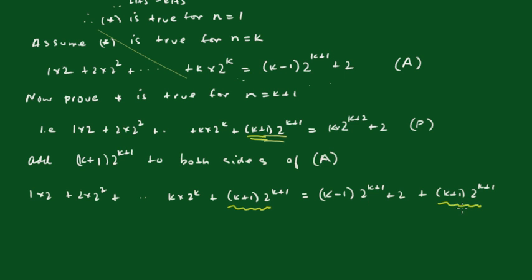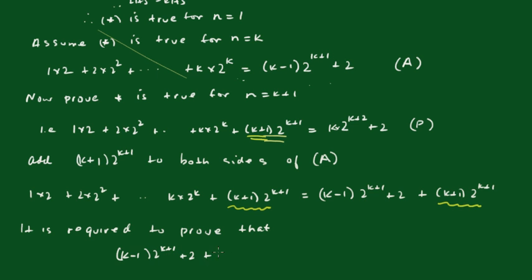We've just added those yellow bits to both sides. So now it is required to prove that the right hand side — (k minus 1) times 2 to the k plus 1, plus (k plus 1) times 2 to the k plus 1, plus 2 — equals k times 2 to the k plus 2, plus 2. If we can prove that, then we've proved the result.